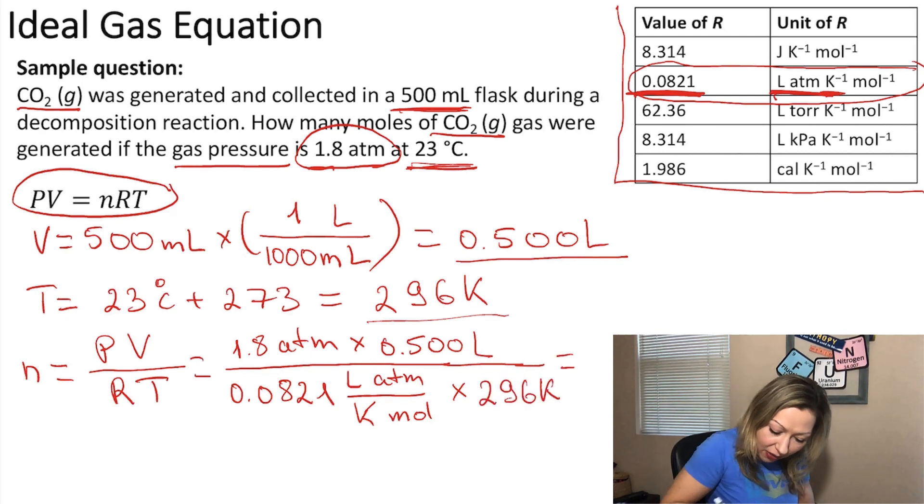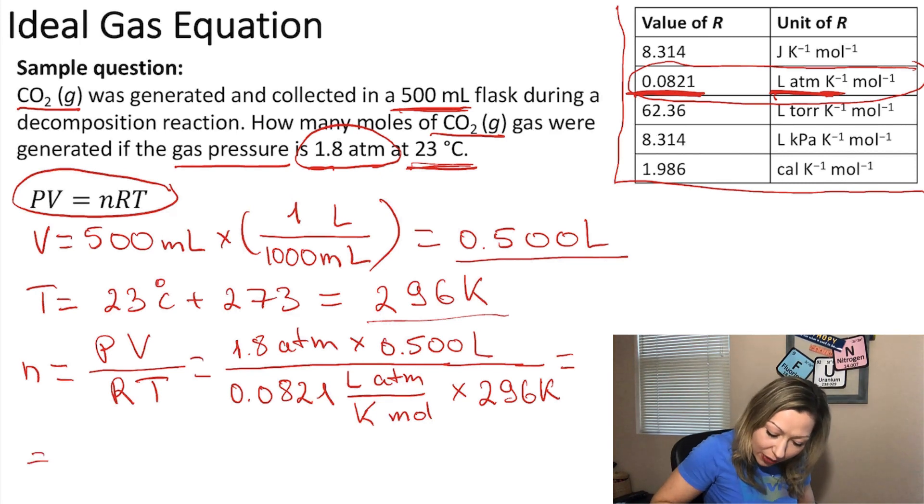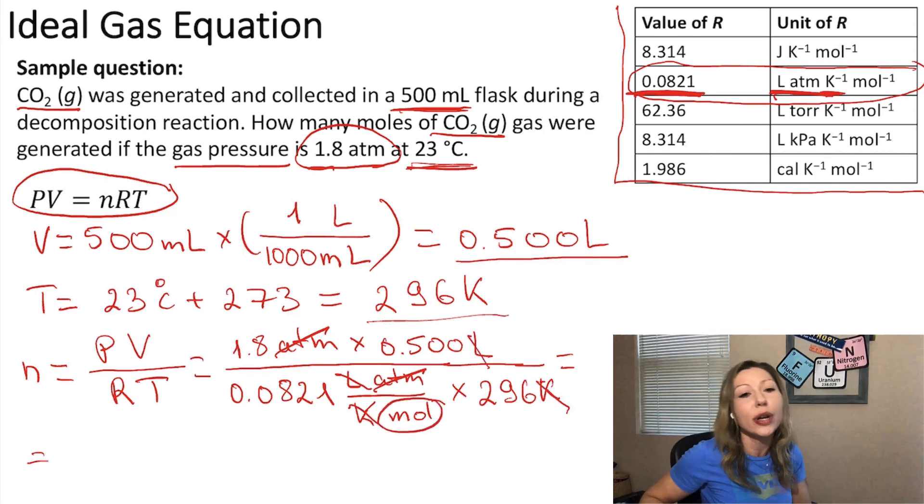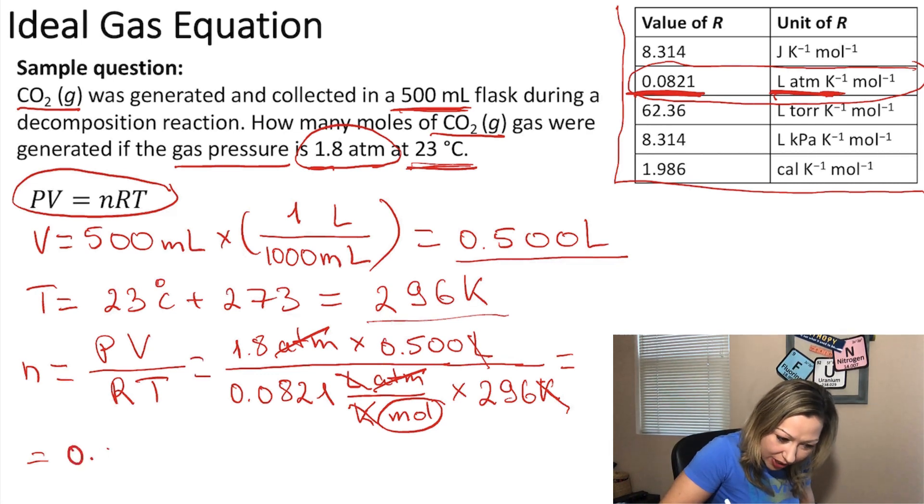Okay, now let's double check the units. So the atm will cancel out, the liters will cancel out, the Kelvin will cancel out, and our final unit is going to be moles. And if you do this calculation you are going to get 0.037 mole.